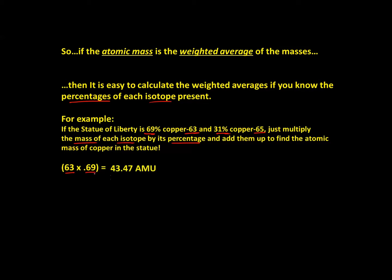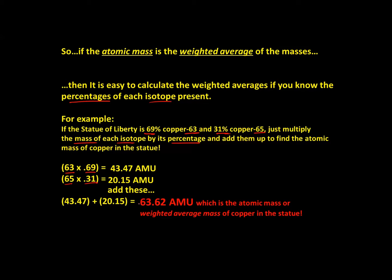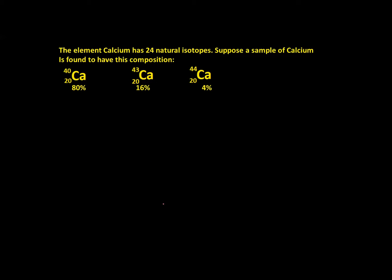Multiplying copper-63 by 69% gives us 43.47 amu. Copper-65 is represented by 31% of the copper in that statue — multiplying that out gives us 20.15 amu. We add the weighted averages together to get the weighted average of the total, giving us an average atomic mass of 63.62 amu for the copper in the Statue of Liberty.